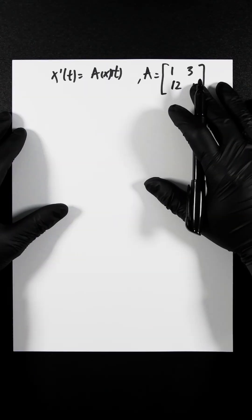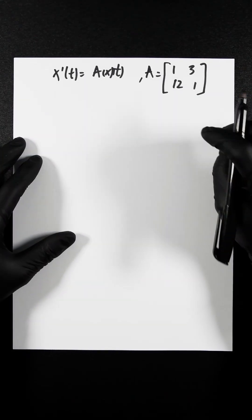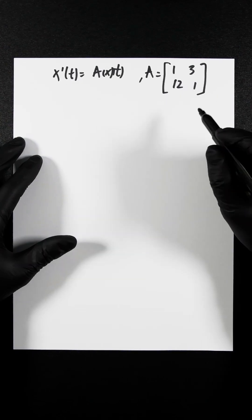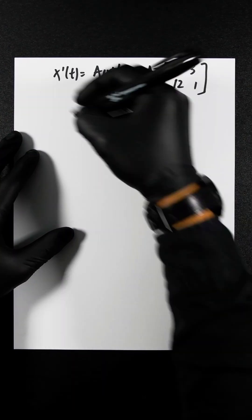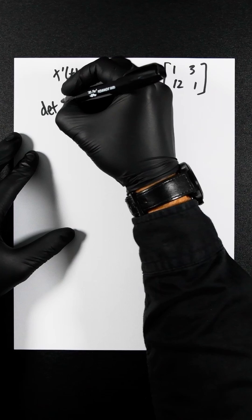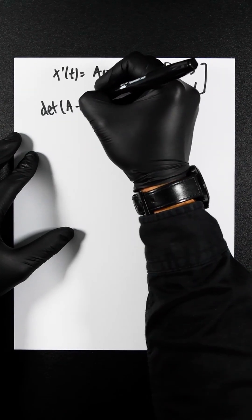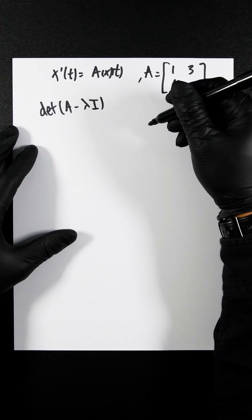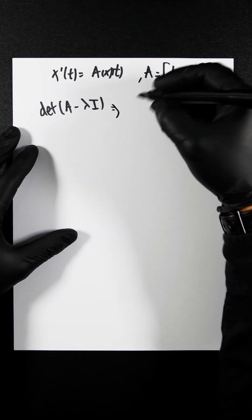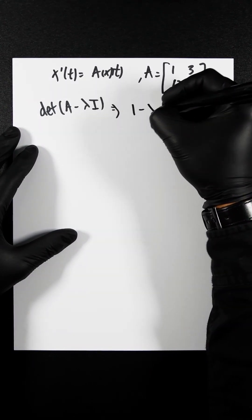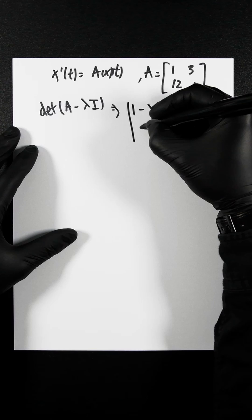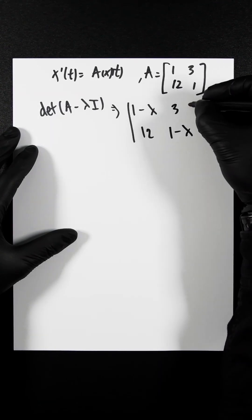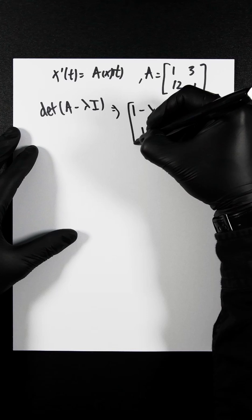We've got this 2x2 matrix and we need to find the general solution of the system. Let's first find the characteristic polynomial by computing the determinant of A minus lambda I, where I is the identity matrix. You'll get 1 minus lambda in the A spot, 12 and 3 remain the same, and 1 minus lambda in the D spot.